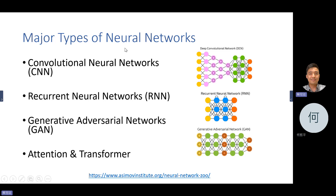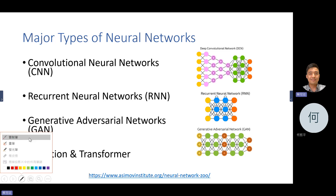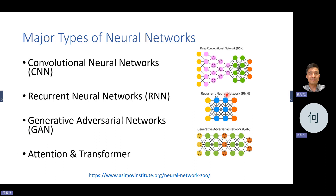So the major types of neural networks: first is the convolutional neural network, called CNNs. Another one is the recurrent neural network. The specialty is that this has a loop — recurrent connections inside the network — so it's called a recurrent neural network.